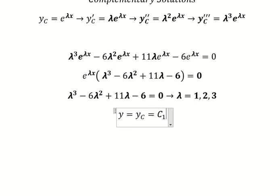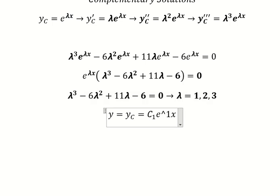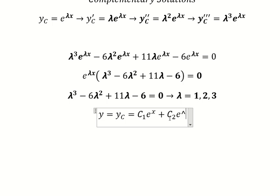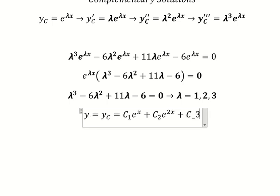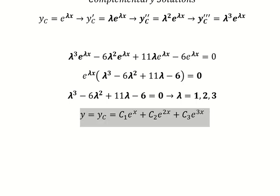We have C₁, the first constant, times e to the power of x — putting lambda equals 1 in here. We also have e to the power of 2x, and C₃, the third constant, times e to the power of 3x. This is the final answer. Thank you for watching.